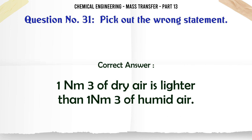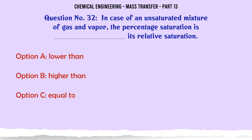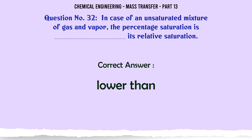In case of an unsaturated mixture of gas and vapor, the percentage saturation is ___ its relative saturation: A. Lower than. B. Higher than. C. Equal to. D. Either A or B depending on the mixture composition. The correct answer is: Lower than.